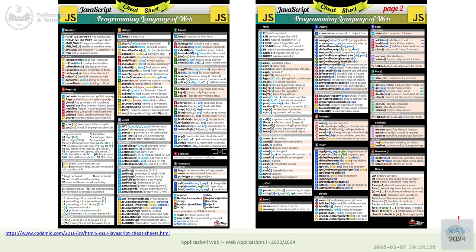Let's start again. I pulled up this cheat sheet just to review what we've already covered — the string functions, many of the array methods. Next will be very interesting: the functional methods for working with arrays, so we'll have a chapter on those. The math library is very easy — just functions that compute basic math operations.